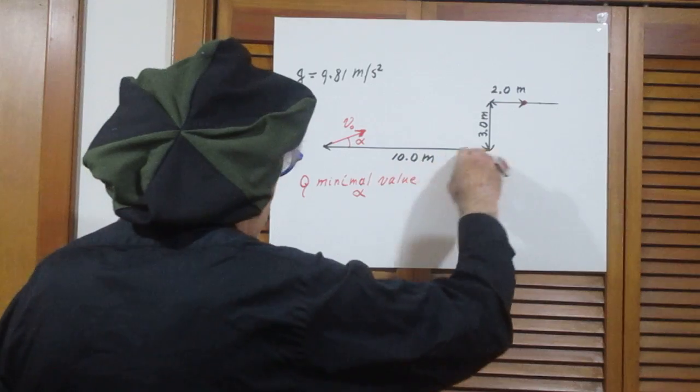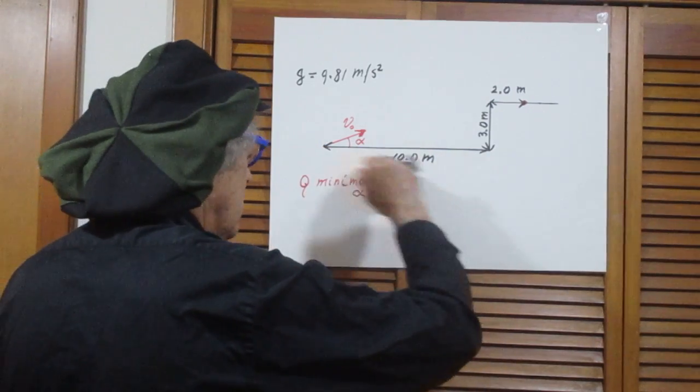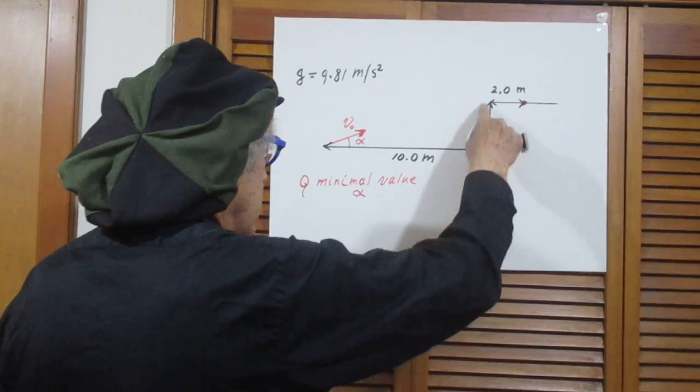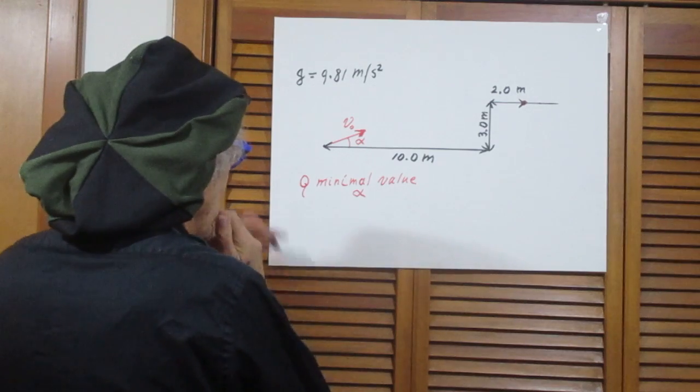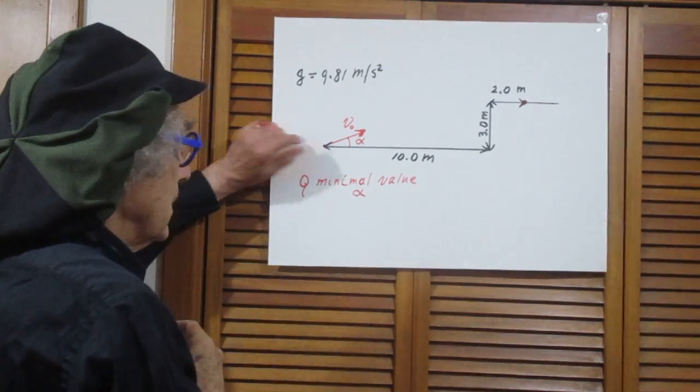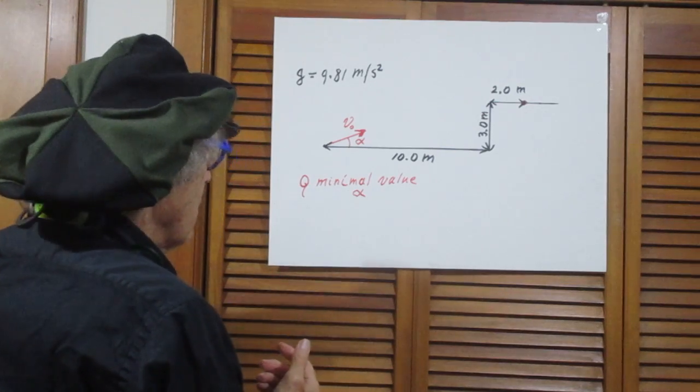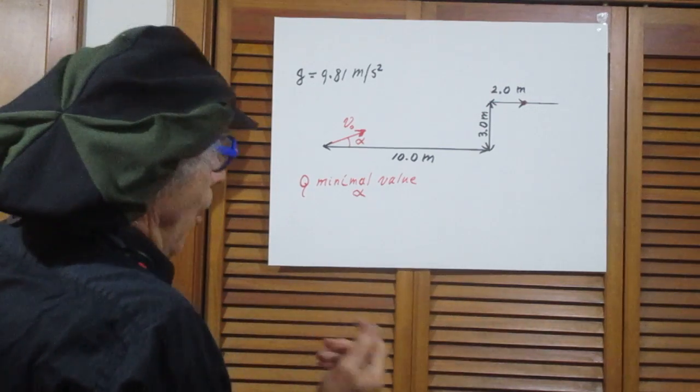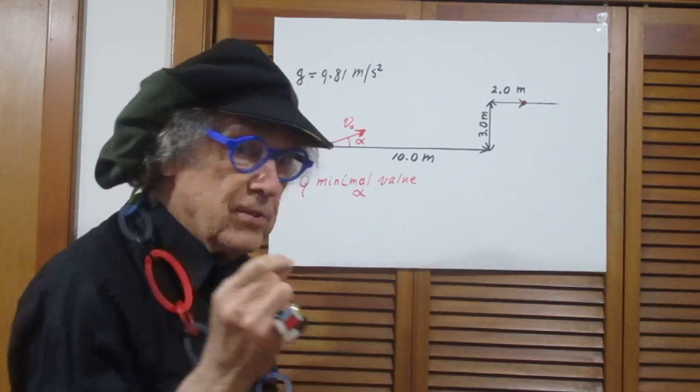This is a surface, a horizontal surface. Let's say it's the ground, it's your ground. And here is a building, and here is a roof. On top of the building you're standing here with a gun.